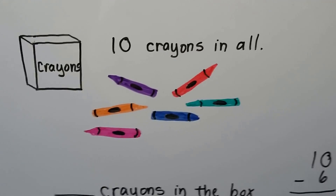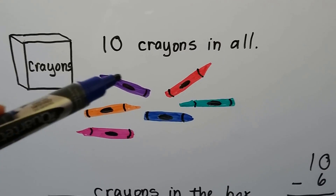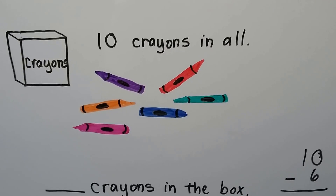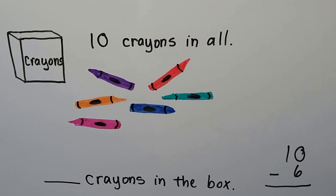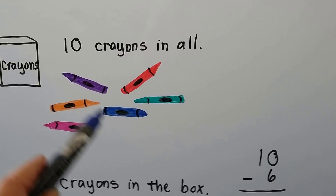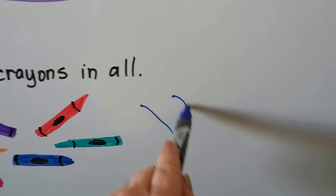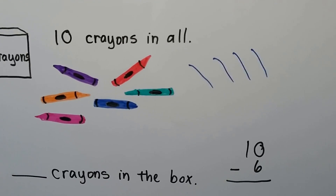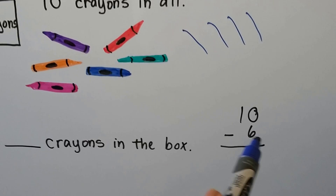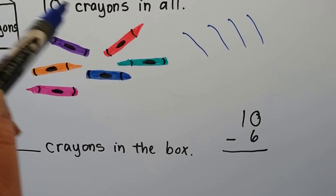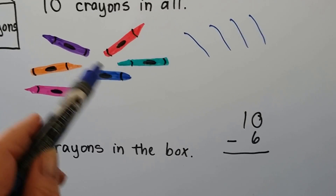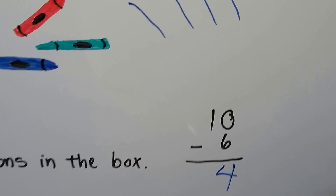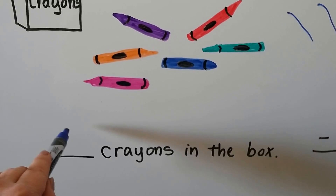It says there are ten crayons in all, but I only see six. So how many must be in the box? We can draw sticks for the rest of the crayons — seven, eight, nine, ten — that means four crayons must be in the box. We can also do ten minus six, which equals four. There must be four crayons in the box.